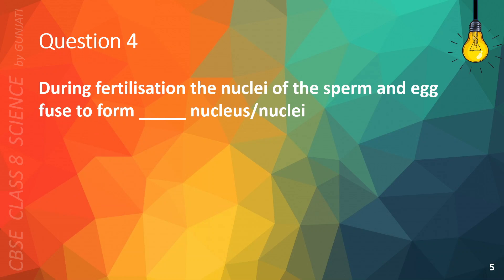Question 4. During fertilization, the nuclei of the sperm and egg fuse to form how many nuclei? A. 1, B. 2, C. 3, or D. 4. The correct answer is A. 1.